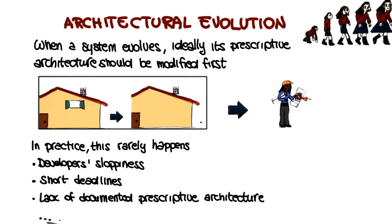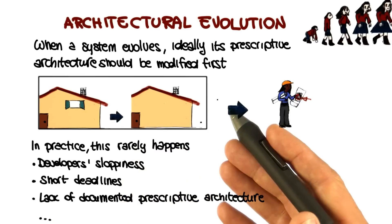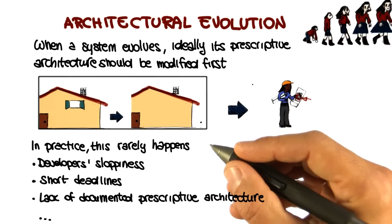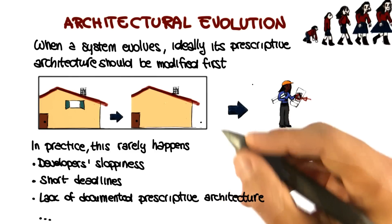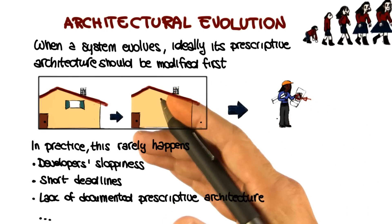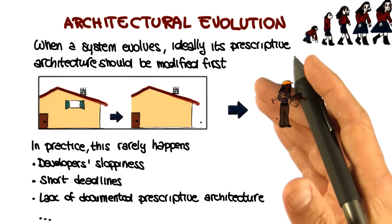As I said, there are many more other reasons why that happens. But the important point is that it does happen, and it does happen often. And the result is that prescriptive and descriptive architectures diverge.